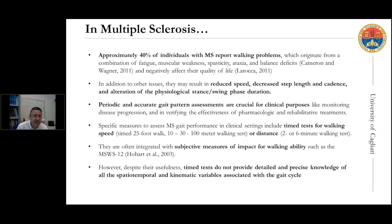Our experience is mainly in the field of multiple sclerosis because here in Sardinia we have a very high incidence rate of MS — almost double with respect to any other Italian region or European country. Approximately 40% of individuals with multiple sclerosis report walking problems originating from a combination of fatigue, weakness, spasticity, ataxia, and balance deficit, manifesting in reduced speed, decreased step length and cadence, and sometimes alteration of the physiological stance-swing phase duration. It is therefore important to have available tools for periodic and accurate gait pattern assessment.